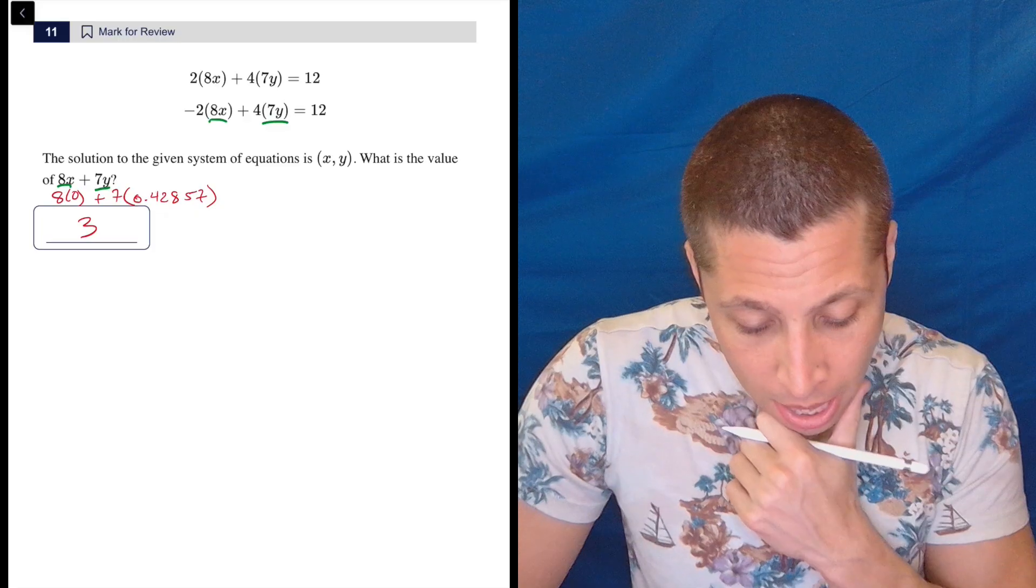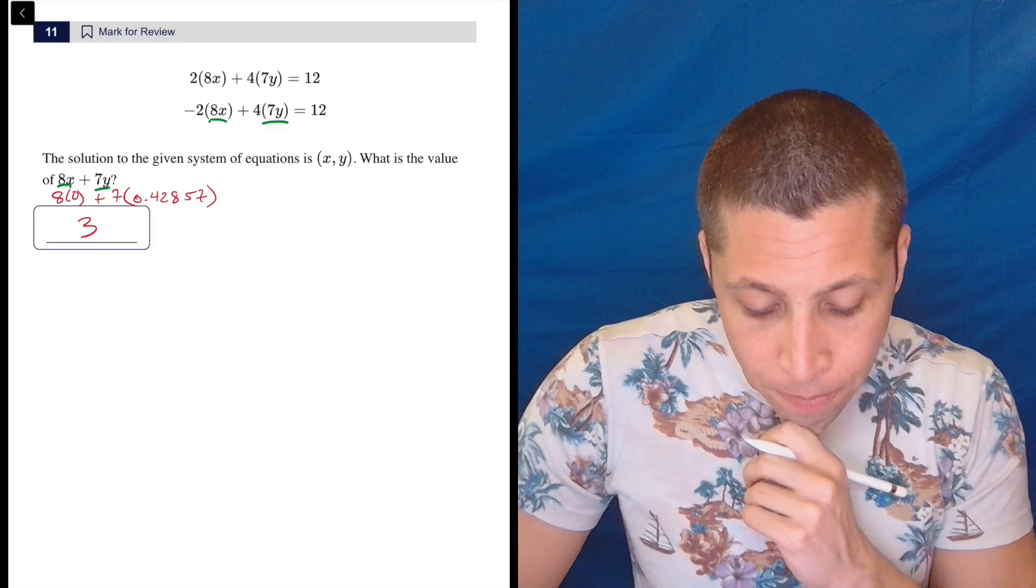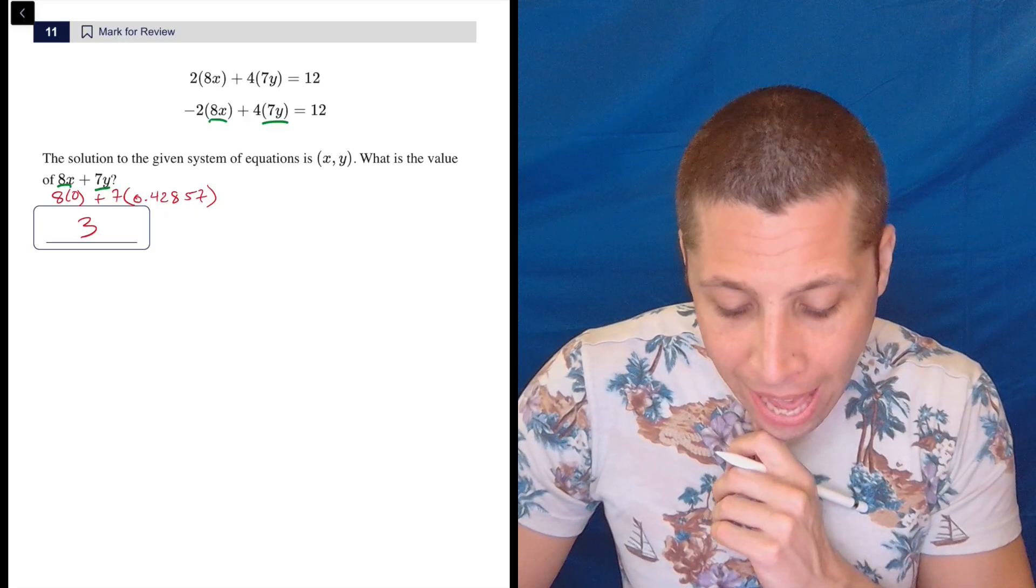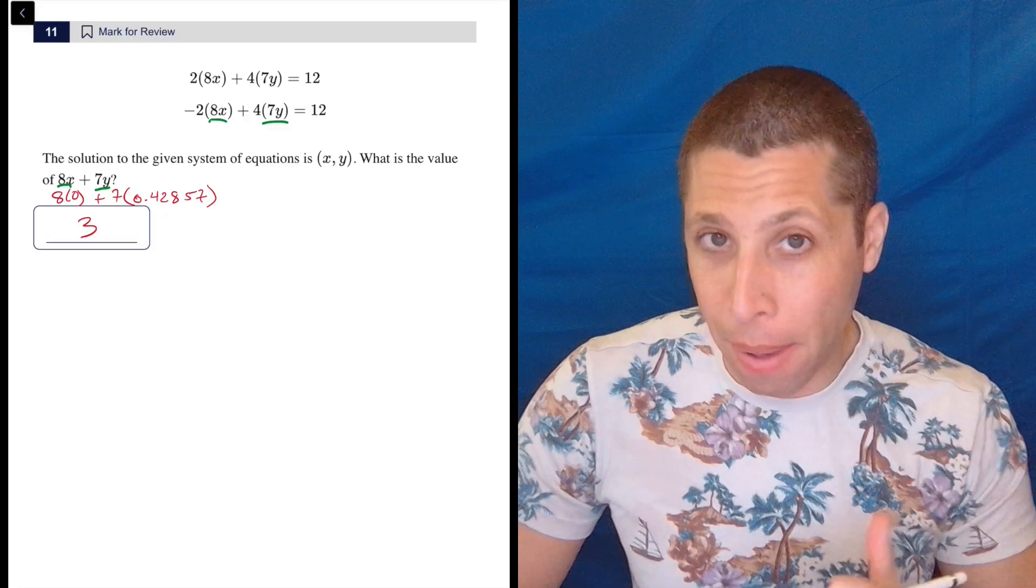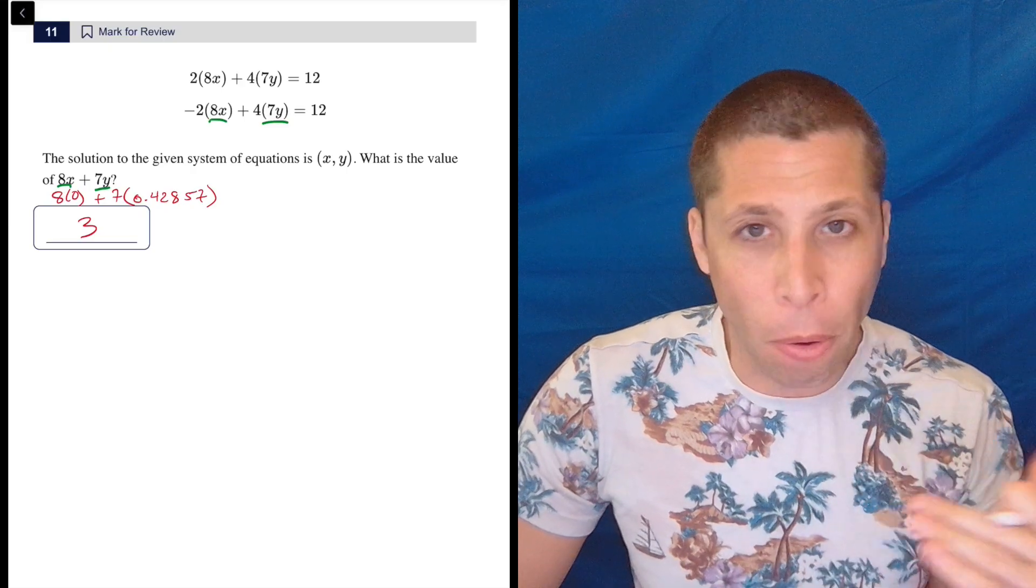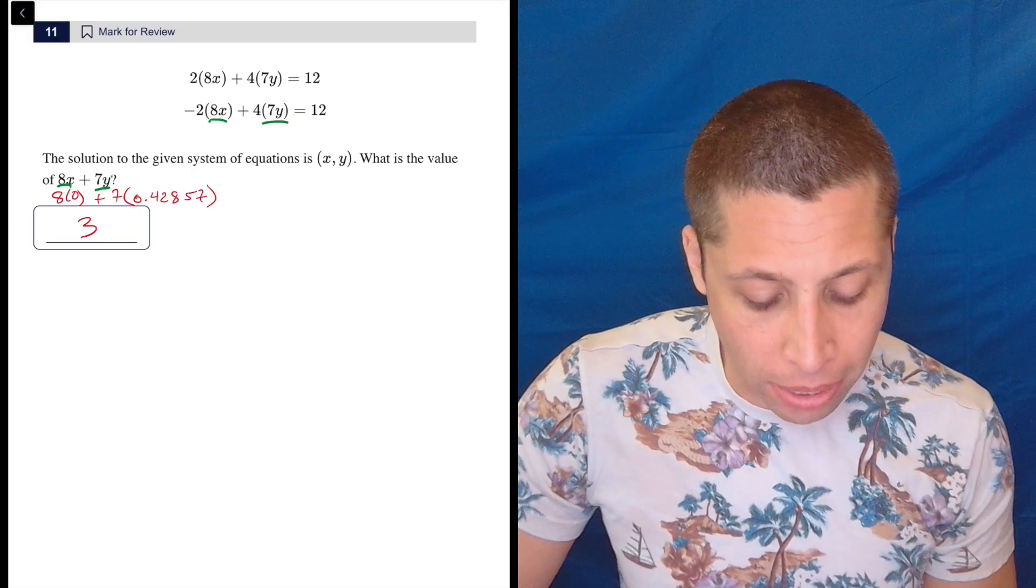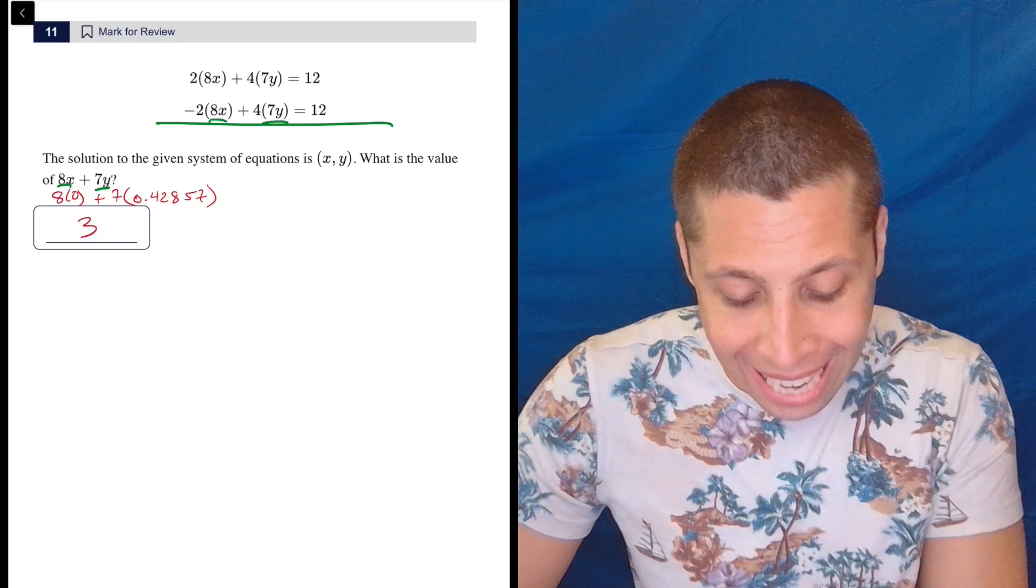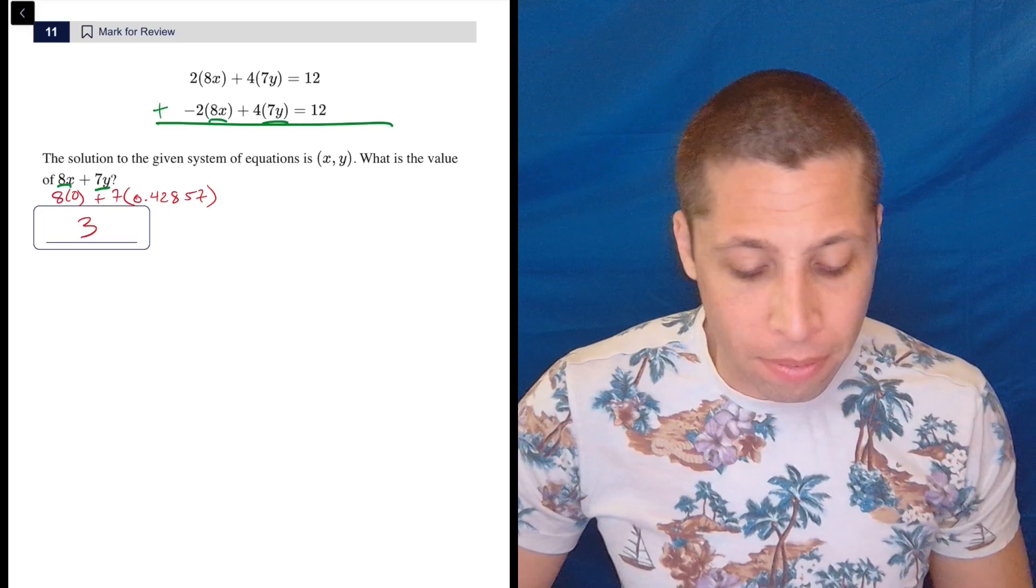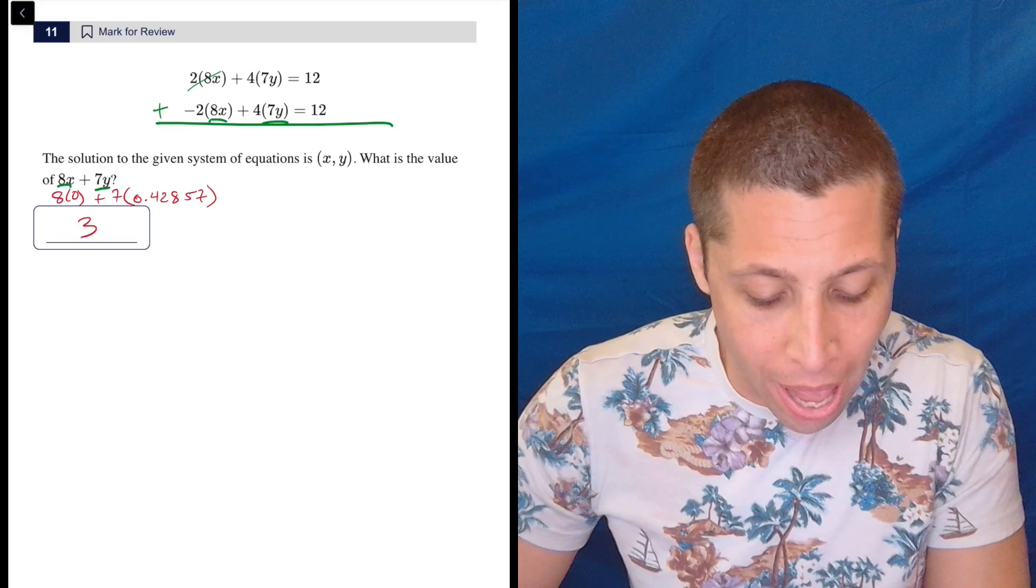Like, I don't, unless I'm wrong, I don't think there's a way to just quickly get 8x plus 7y to pop out of these equations. If I add them or multiply them in some way, I think I got to just do it, like, the long way. I guess what I would do is I'd add these two equations together. Because if I do that, the 8x's kind of go away, right?